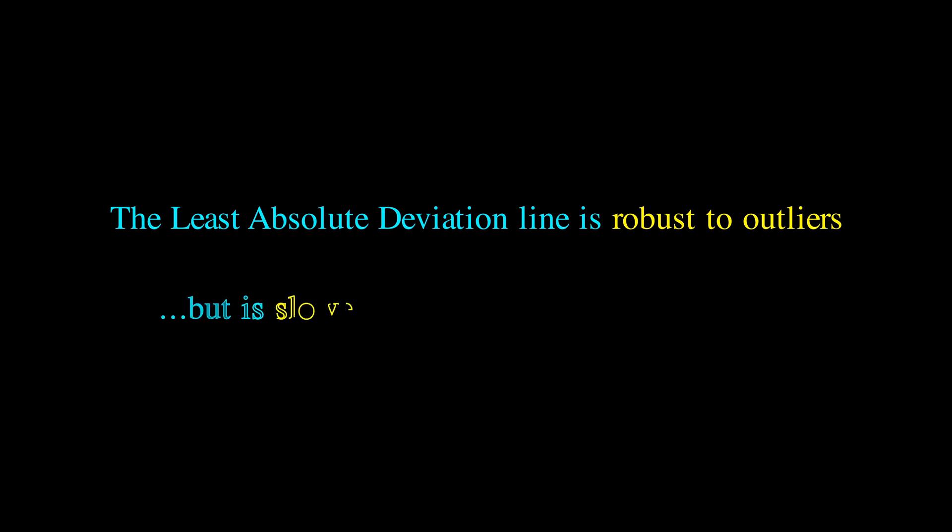The robustness of the least absolute deviation line to outliers is a major reason why we may sometimes want to use it over least squares. The only downside is that it requires running simplex to get a solution, which will be slower in general.